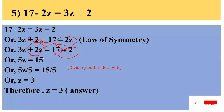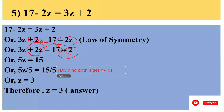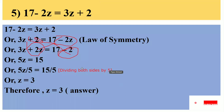We have minus 2 minus 3, giving minus 5, and then 15 on the other side. The coefficient is 5, so we divide both sides by 5 to find the value of z.